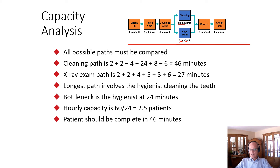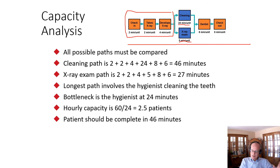The longest path involves the hygienist cleaning teeth, so the patient is there for 46 minutes. The bottleneck is the hygienist at 24 minutes. The hourly capacity is 60 divided by 24, which equals 2.5 patients per hour — assuming someone else handles the other activities. If the hygienist were doing all steps, that would change. But if the hygienist only does cleaning, we can see 2.5 patients per hour, and each patient should be done in 46 minutes.